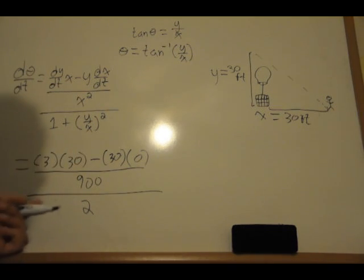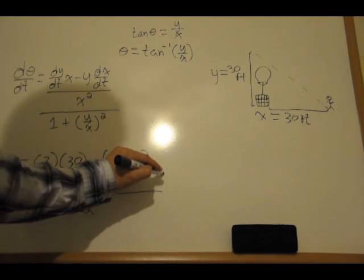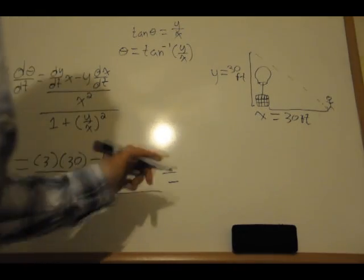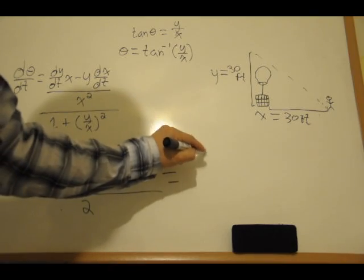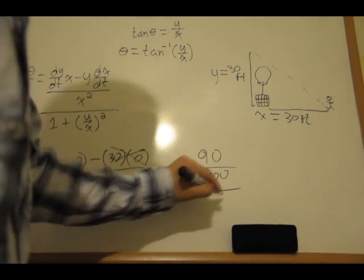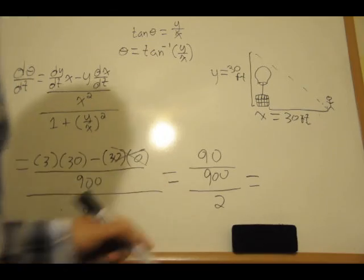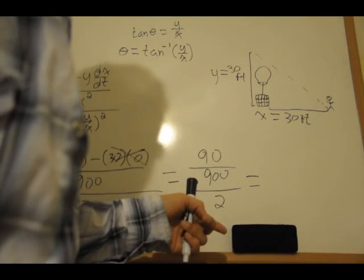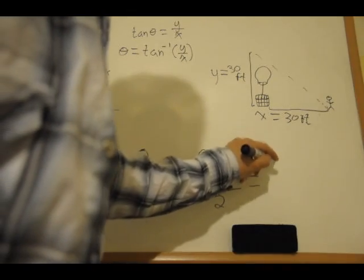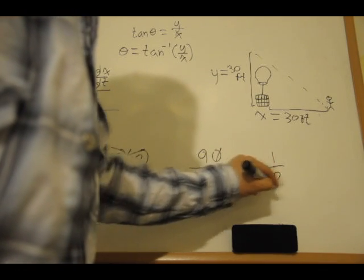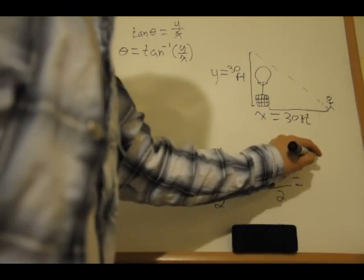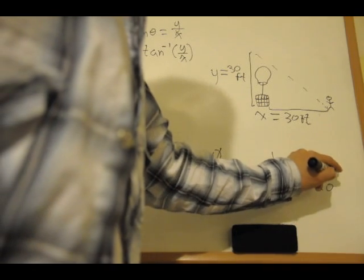Now we do the calculations. The dx/dt term drops out, so we have 3 times 30 equals 90, divided by 900, all divided by 2. We cancel: 90 over 900 simplifies to 1 over 10, divided by 2, giving us 1/20 radians per second.